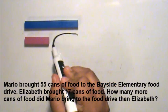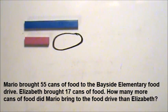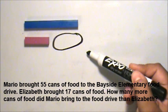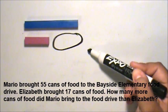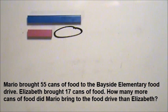This space is the difference between the number of cans that Mario brought and the number of cans that Elizabeth brought. Now let's draw the strip diagram.